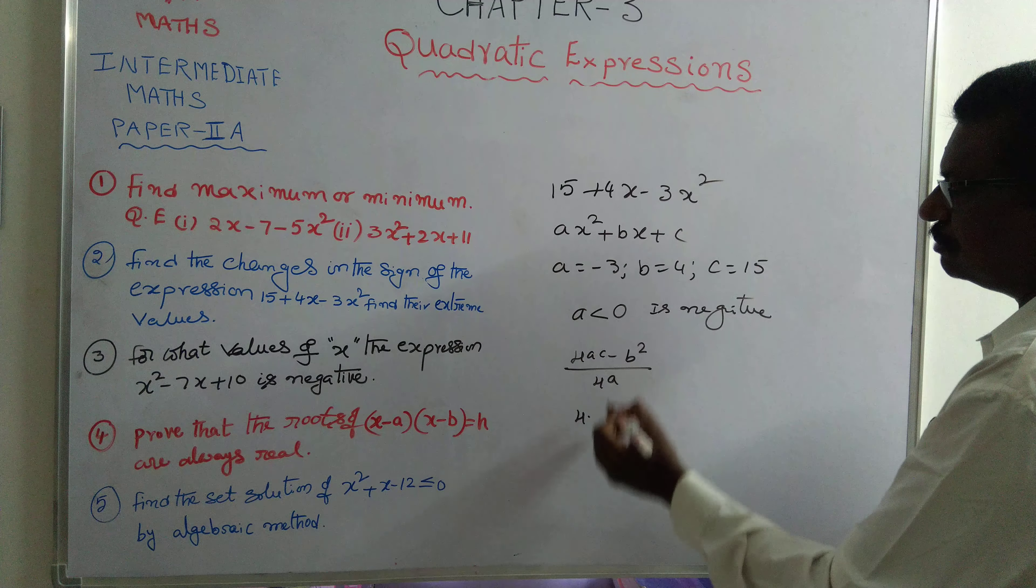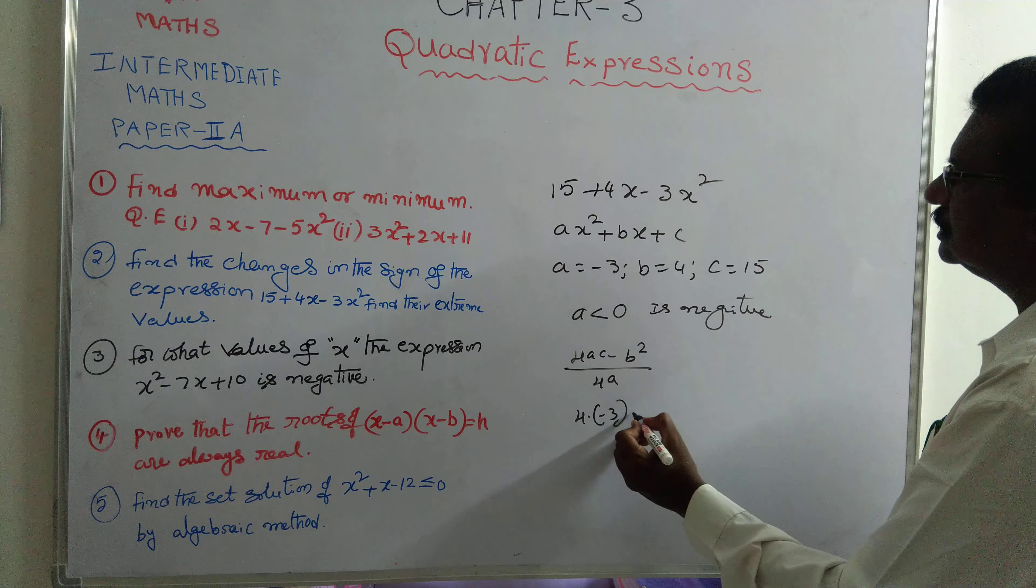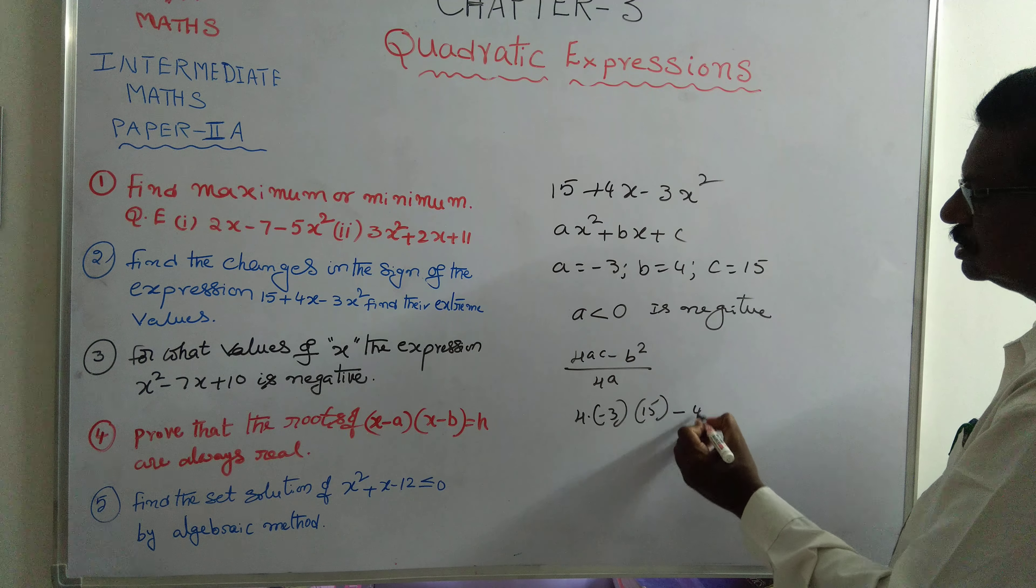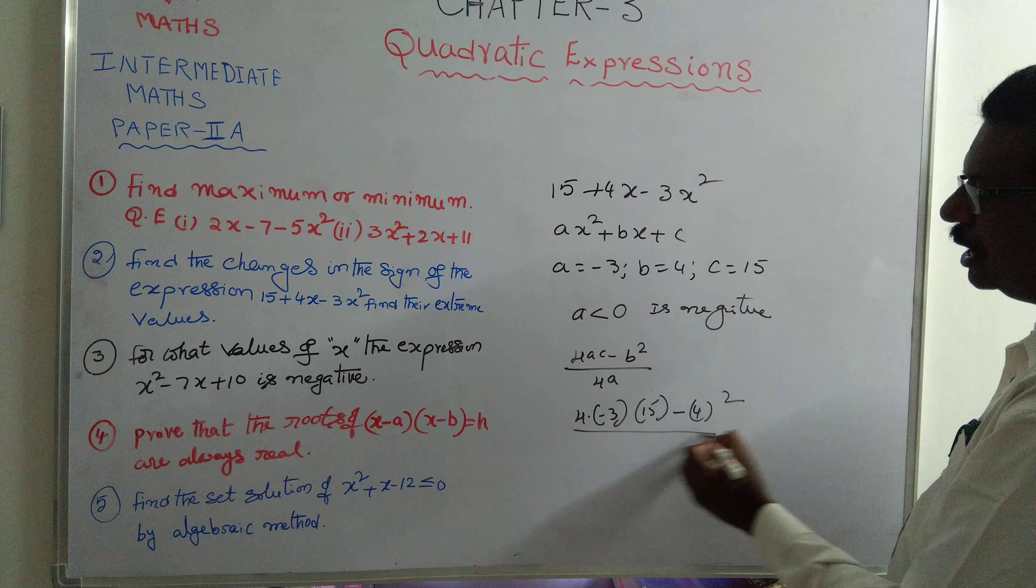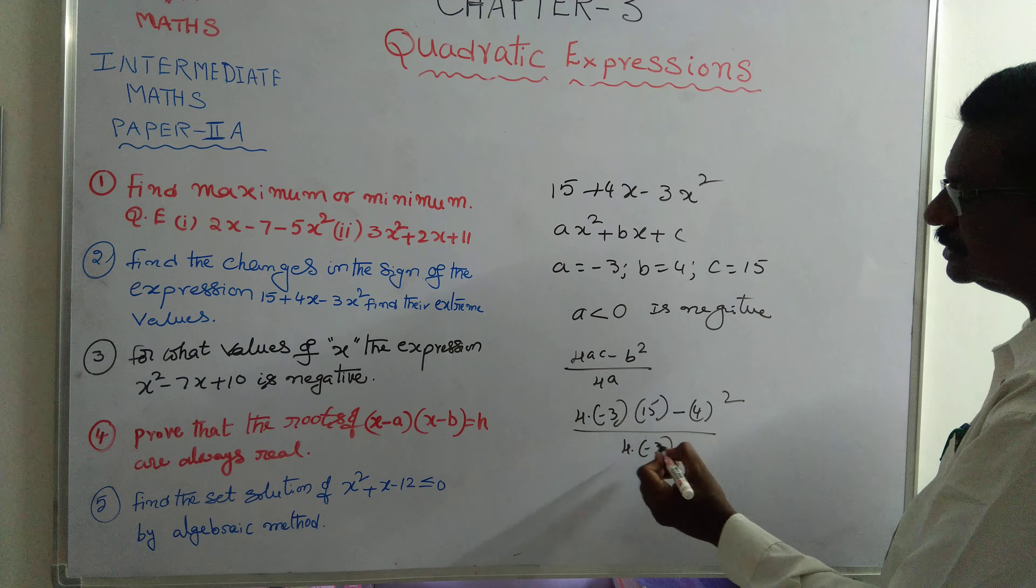That is equal to 4 into a means minus 3, c means 15, b 4 square by 4 into minus 3. Simplification.